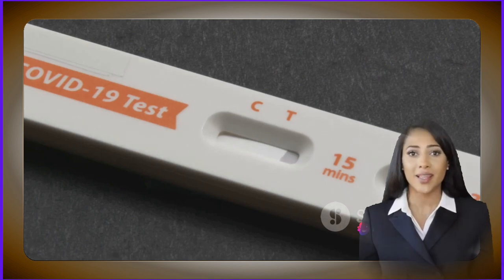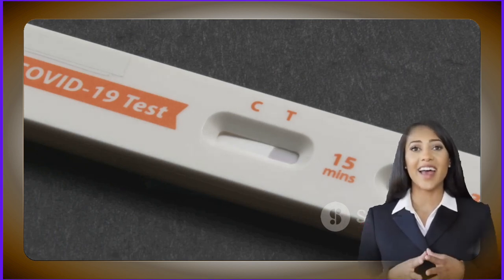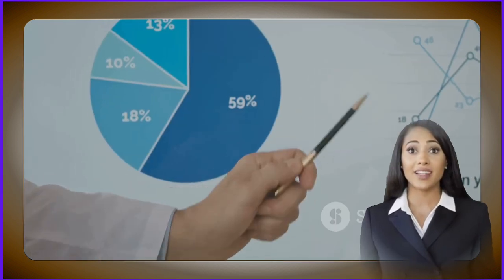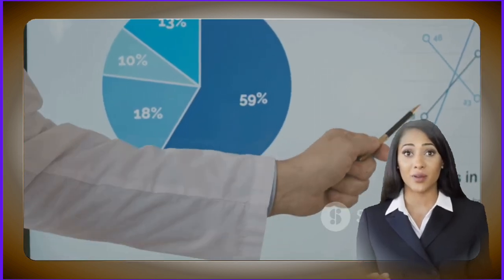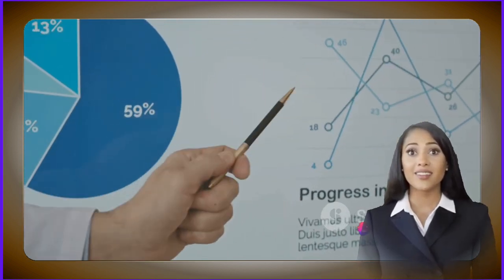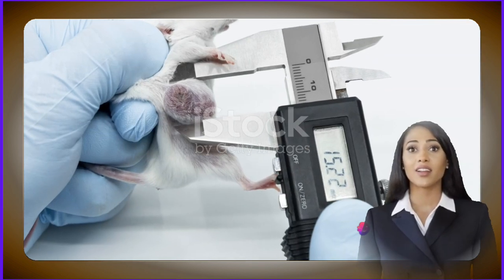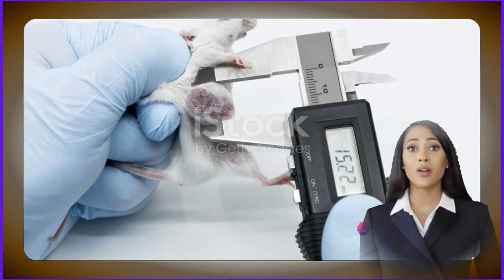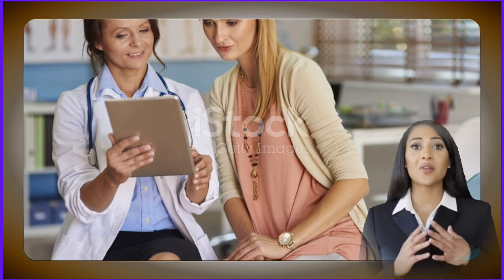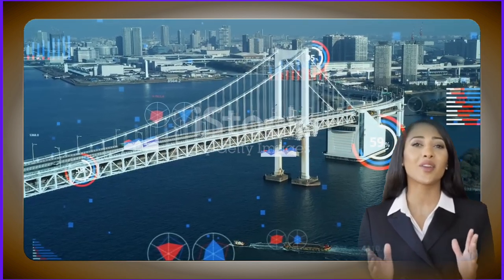If the p-value is less than the significance level, then the result is statistically significant. In layman's terms, it means that the difference observed is likely not due to chance but a real effect. But remember, statistical significance doesn't always mean practical significance — it's important to consider the context and the size of the effect.